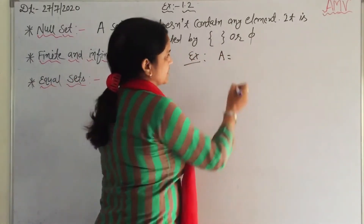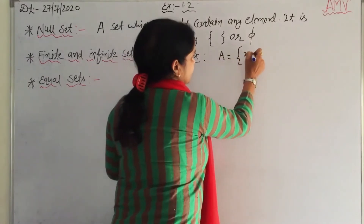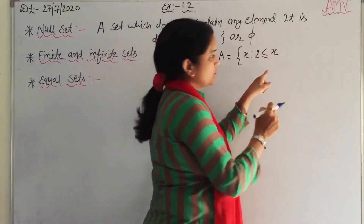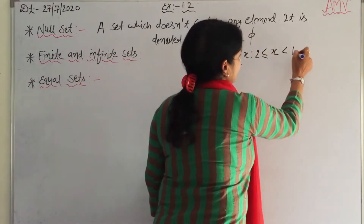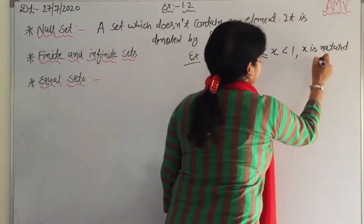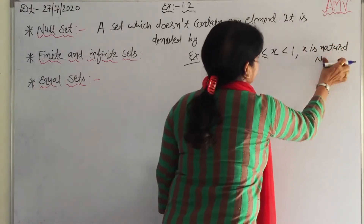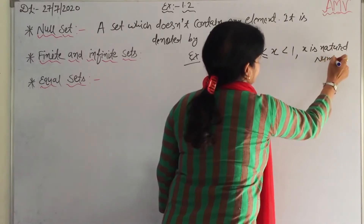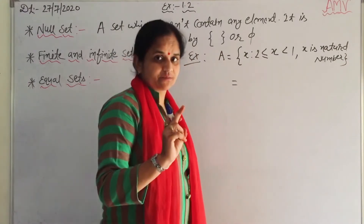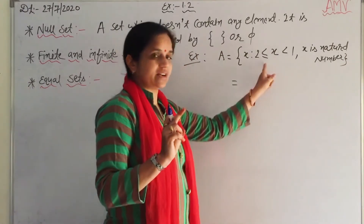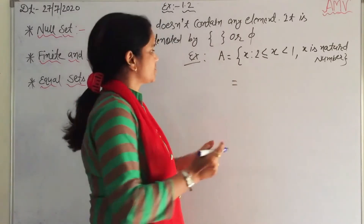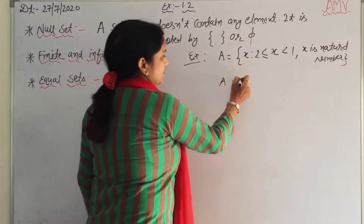Let A be a set of x such that x is greater than or equal to 2 and less than 1, where x is a natural number. Do you know any natural number that is less than 1 and greater than or equal to 2? There is no such natural number, so A is a null set.